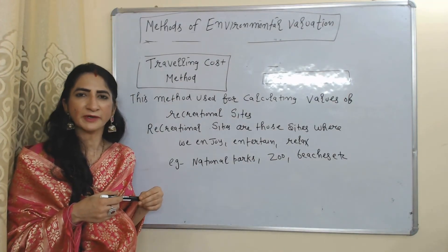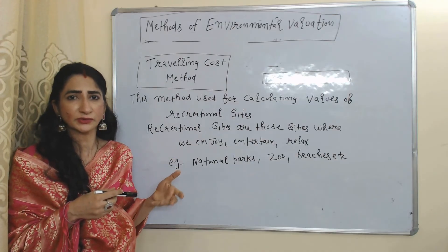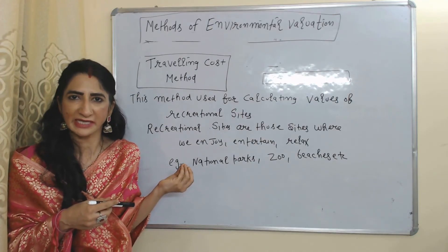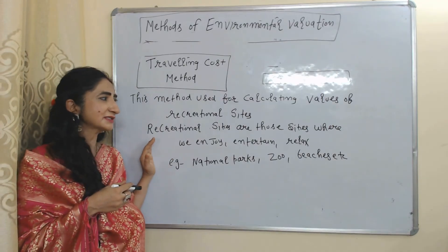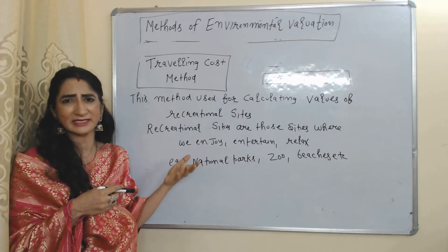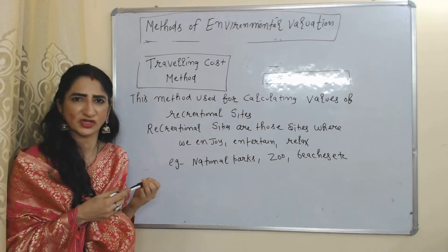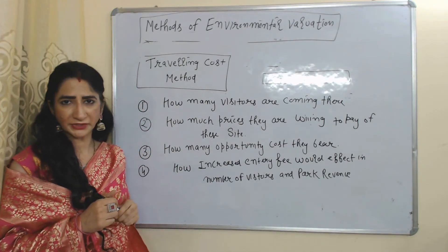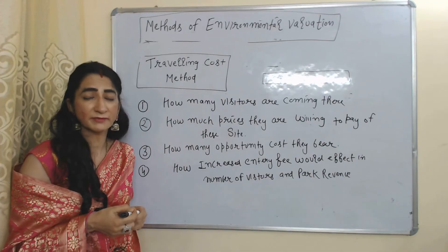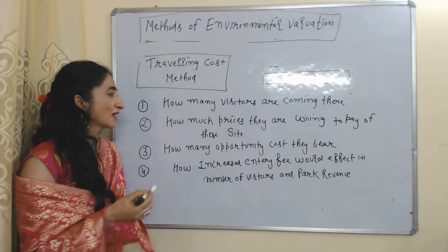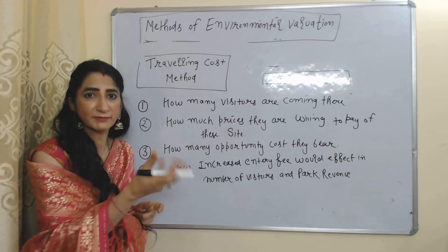The next important method of environmental valuation is the Travel Cost Method. In many developed countries, this method is used to calculate the value of recreational sites. Recreational sites are those sites where we enjoy, entertain, or relax — for example, national parks, zoos, or beaches. To calculate the value of a recreational site, we look at how many visitors are coming there and how much entry fee they are willing to pay.